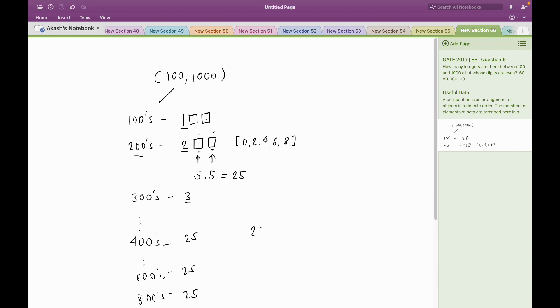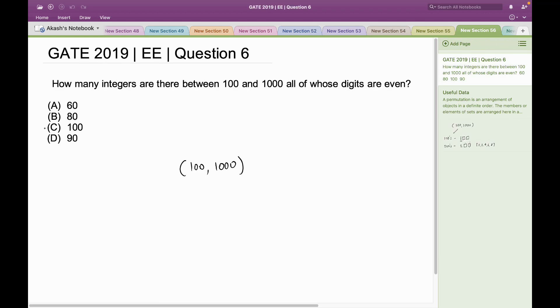So in total, I would have 25 × 4 = 100 different numbers whose all digits are even. This matches with option C. So option C is the right answer. Thank you.